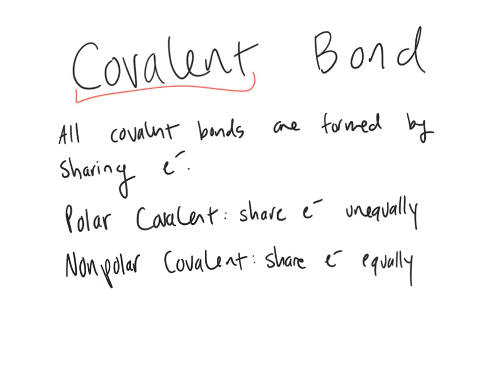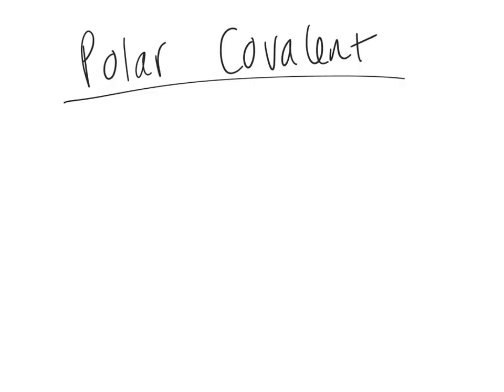A recurring theme in biology is that structure impacts function. Because polar and non-polar covalent bonded molecules share electrons differently, they display different characteristics. Polar covalent bonds tend to have a slight charge, while non-polar covalent bonds have no charge — they're very neutral. The main and biggest example of a polar covalent molecule is water, the most important molecule for life.